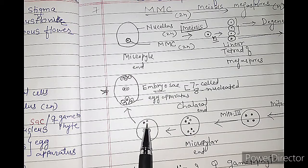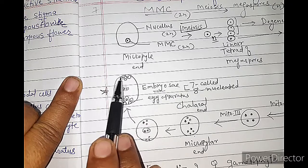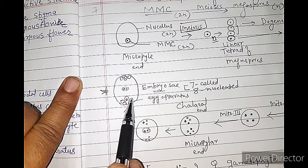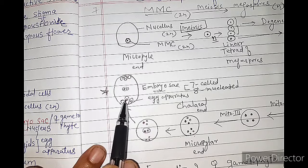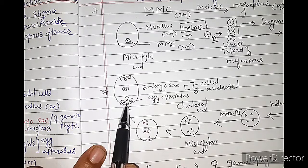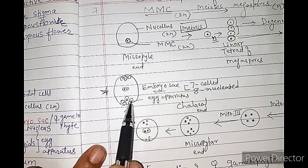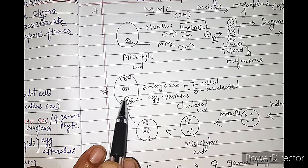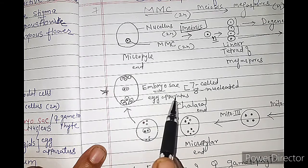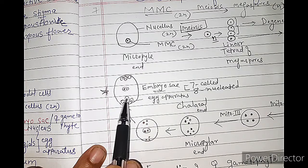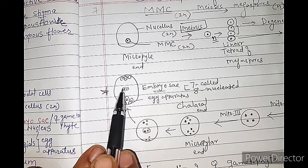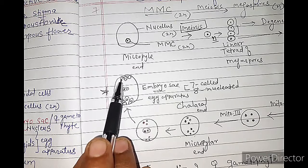The upper 3 nuclei towards the chalazal end form 3 antipodal cells. Of the lower 3 nuclei towards the micropylar end, one nucleus forms the central egg and the other two on either side form synergids — so 2 synergids and 1 egg in the center. This group is called the egg apparatus. The egg apparatus consists of the egg in the center with synergids on either side, a diploid nucleus or polar body in the center, and 3 antipodal cells towards the chalazal end.